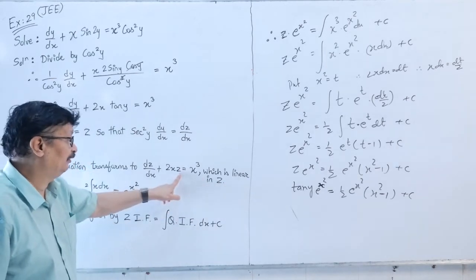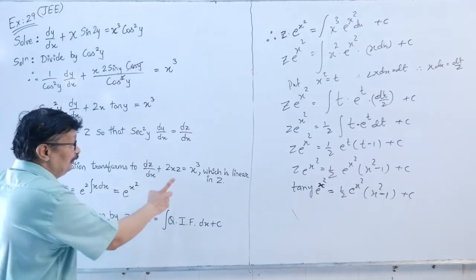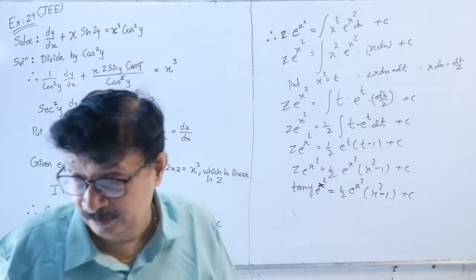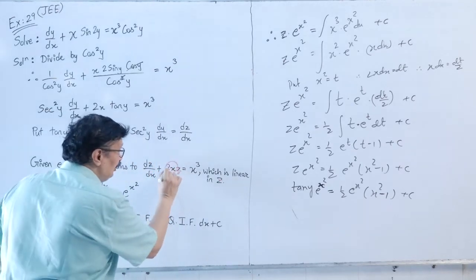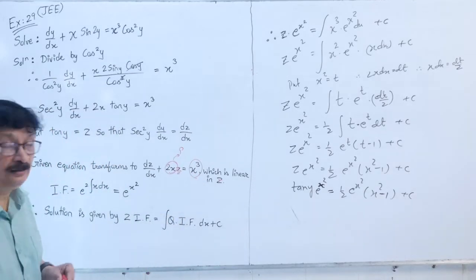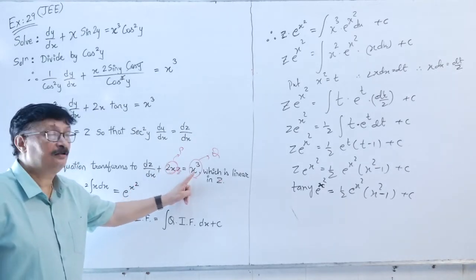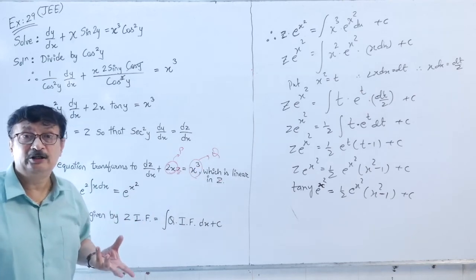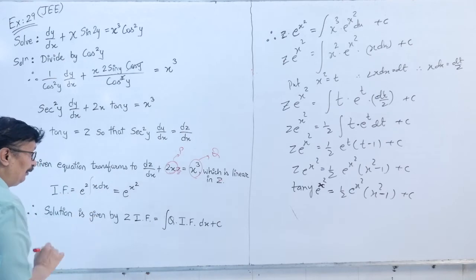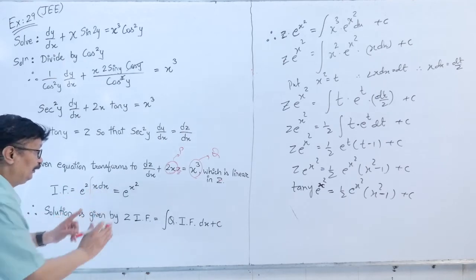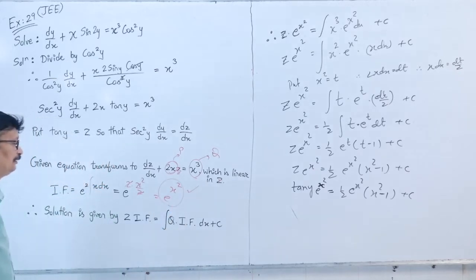This is linear in z, where p = 2x and q = x³. The integrating factor is e^(∫2x dx) = e^(x²). So IF = e^(x²).